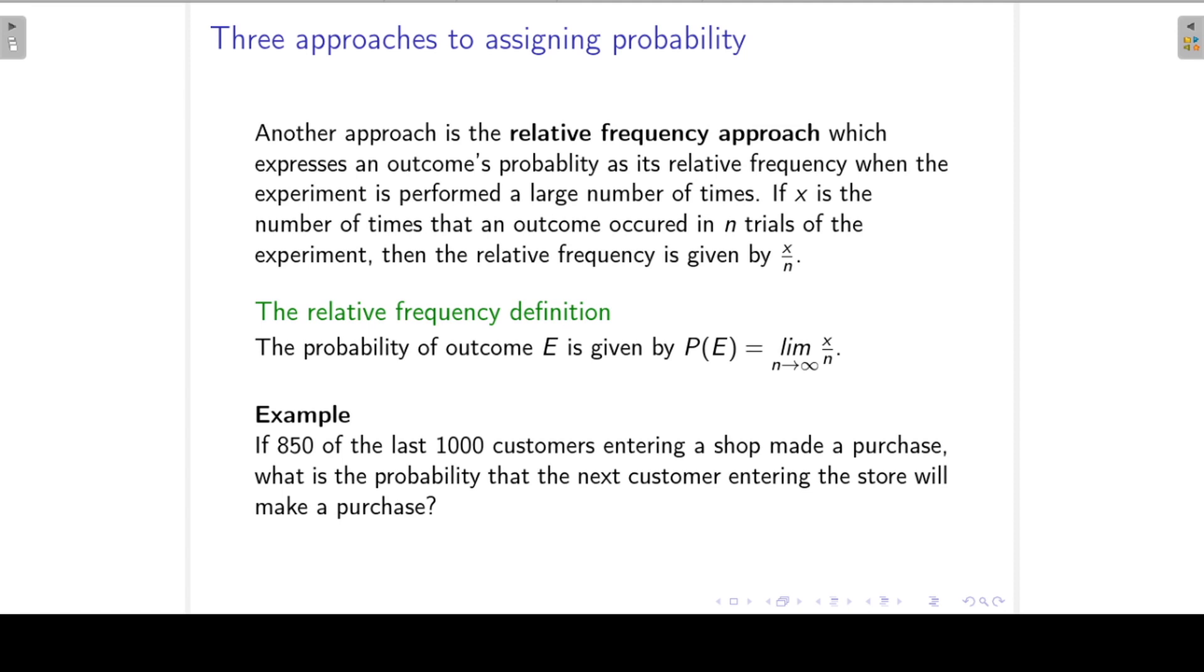In this example, if 850 of the last thousand customers entering a shop made a purchase, what is the probability that the next customer entering the store will make a purchase? So our n here is 1000 and our x, the number of times that the outcome occurred is 850. So according to the relative frequency definition, the probability is 850 over 1000, which is 0.85.